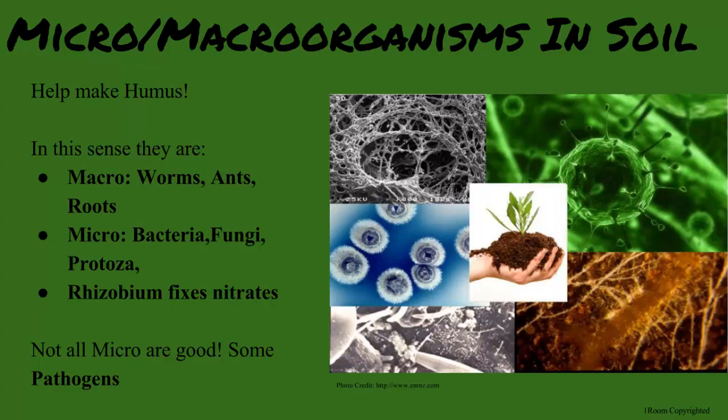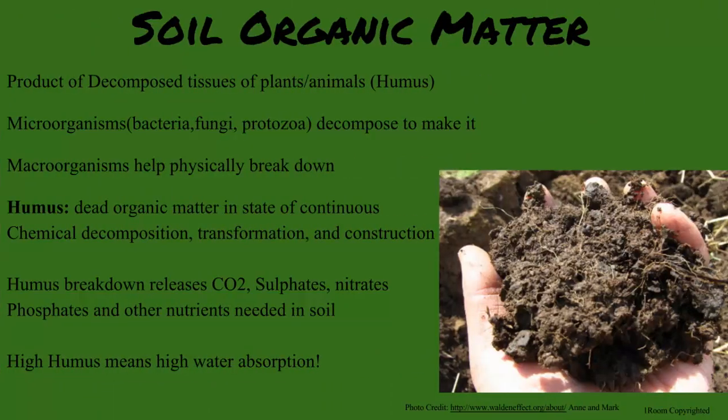So these are the decomposers and nitrogen-fixing bacteria. Good memory. Now, specifically, it is the Rhizobium bacteria that fixes nitrates. But there are some microorganisms that damage the plant too, right? Like pathogens. Correct. The good ones help make the soil organic matter — this is a fancier name for humus. The macro-organisms help physically break it down while the micro-organisms help biologically break it down. It will release such gases as carbon dioxide, sulfates, nitrates, and phosphates — all needed by plants.